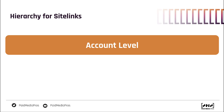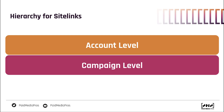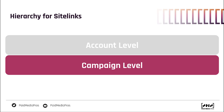If you add site links only to the account level, those site links are eligible to show for every campaign and ad group in your account. They'll run in any instance where Google thinks it's suitable, and you'll have full coverage over your account simply by adding them at the account level. However, if you add site links at both the account level and campaign level, whenever an auction comes up for campaigns that have campaign-level site links, those campaign-level site links are the ones that will show and the account level will not.